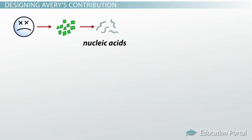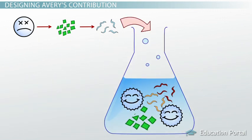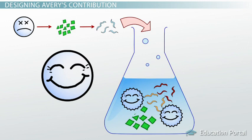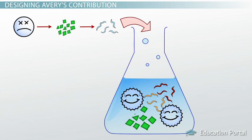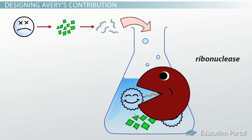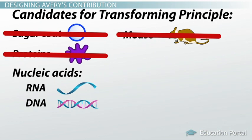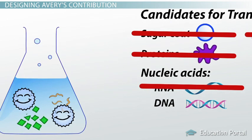Avery and his colleagues were able to isolate the nucleic acids in the lysate by precipitating them with alcohol. They mixed the precipitate with water and tested it for transforming ability by mixing in the live R-cells. Sure enough, the nucleic acids contained the transforming principle. But Avery knew that this mixture contained both types of nucleic acids — DNA and RNA. So to rule out RNA, he destroyed it with a ribonuclease enzyme. The solution still had the transforming principle, and at this point Avery was pretty sure that DNA was the culprit.